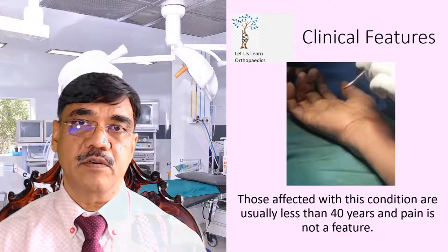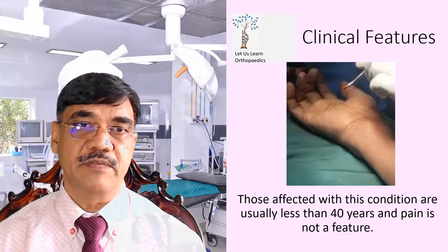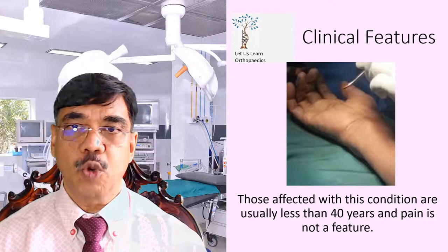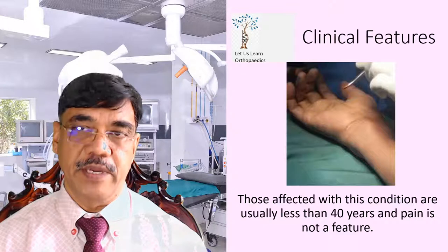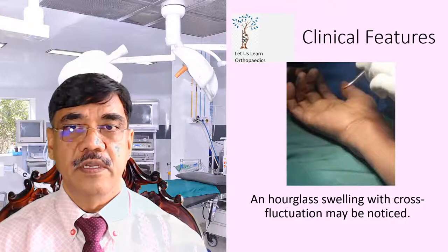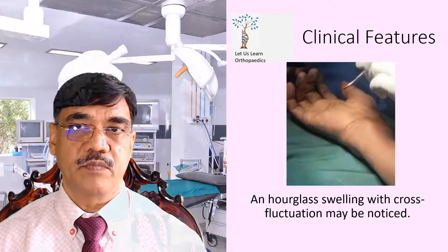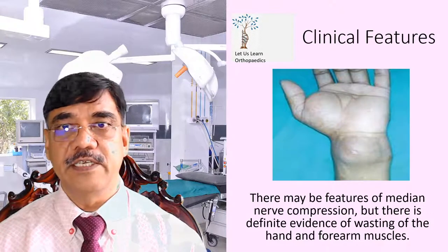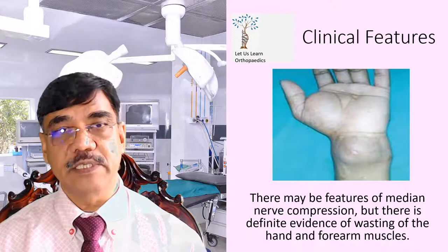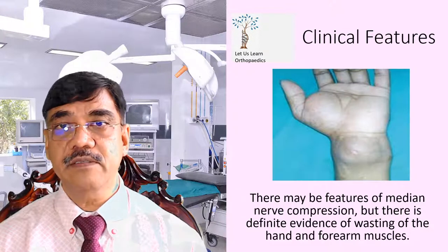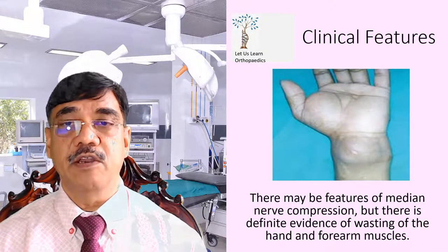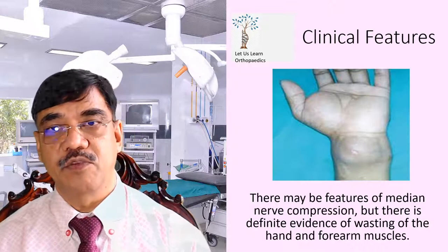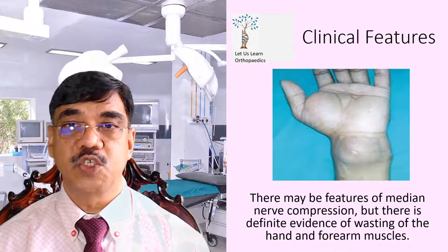As far as the clinical features of Compound Palmar Ganglion are concerned, those affected are usually less than 40 years of age. The chief complaint is always a swelling, not pain — pain is not a feature. An hourglass swelling with cross fluctuation may be noted. There may be features of median nerve compression, and there is definitive evidence of wasting of hand and forearm muscles. The forearm muscle wasting occurs because tuberculosis is the main etiology, and it is a hallmark of tuberculosis infection that there is disproportionate excessive muscle wasting.